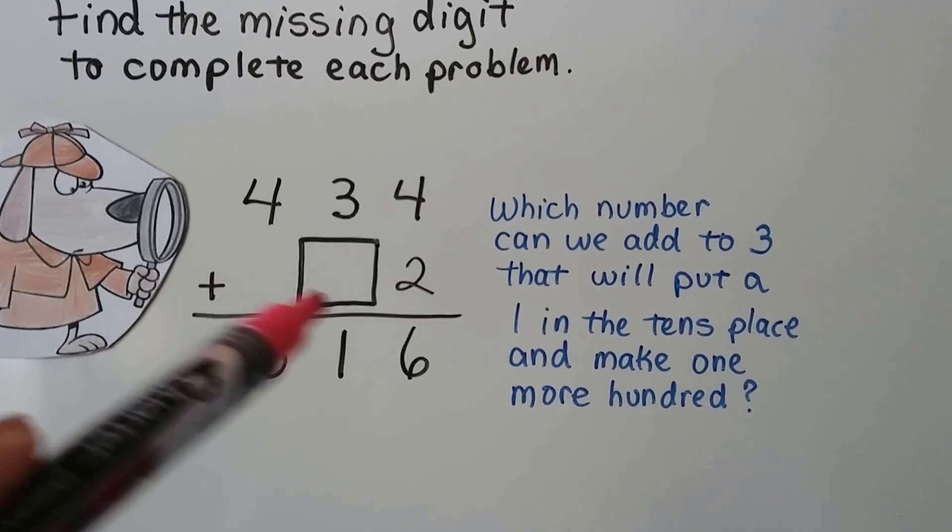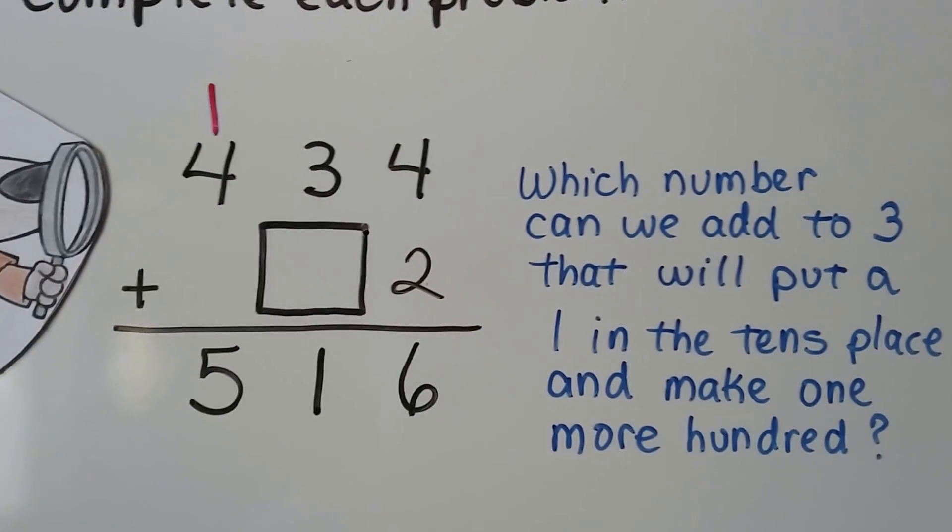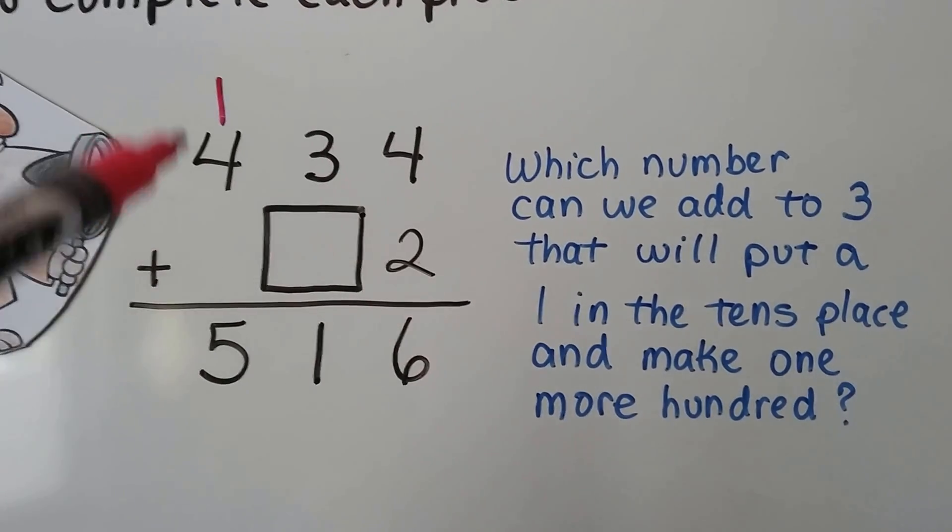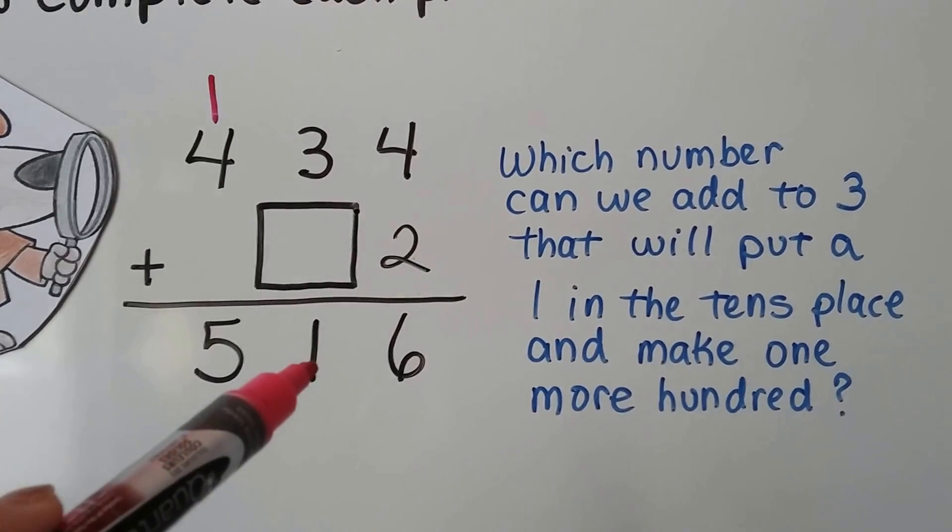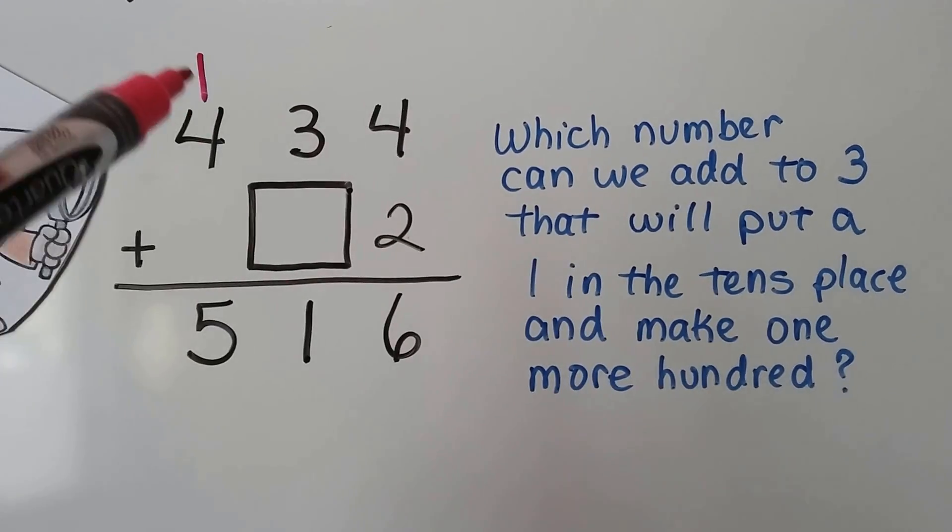Well, they must have regrouped and put a 1 here. So now look at this. We have a 1 up here and a 1 down here. What could we add to 3 that would give us an 11?